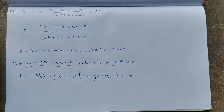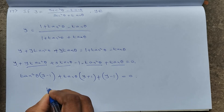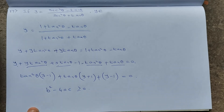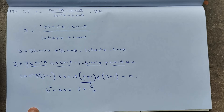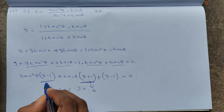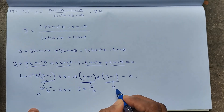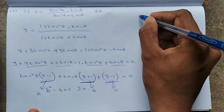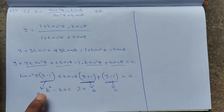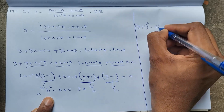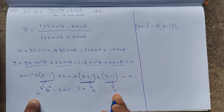For real roots of this quadratic equation, the discriminant b² − 4ac ≥ 0. Here a = y − 1, b = y + 1, c = y − 1. So (y + 1)² − 4(y − 1)(y − 1) ≥ 0.